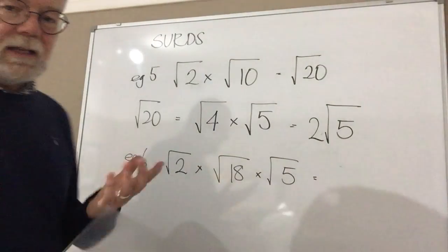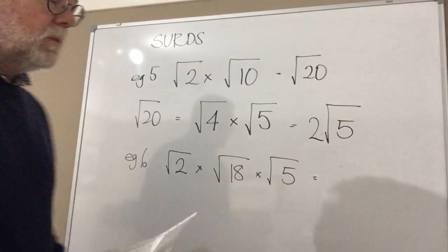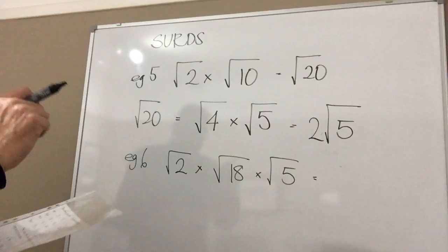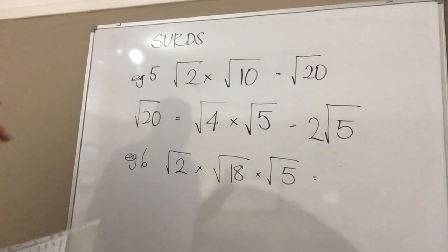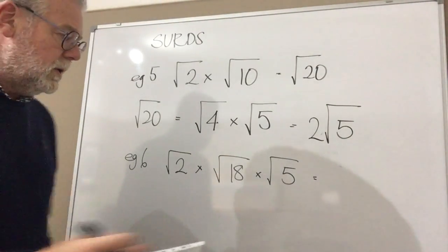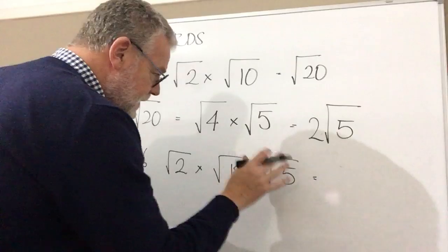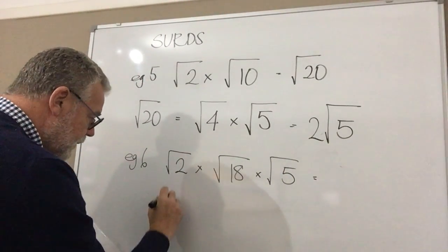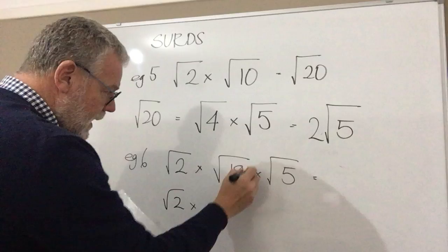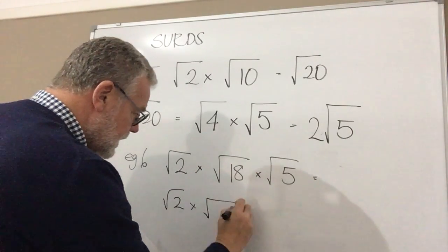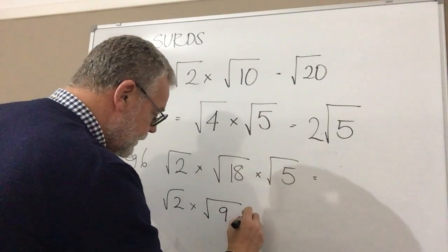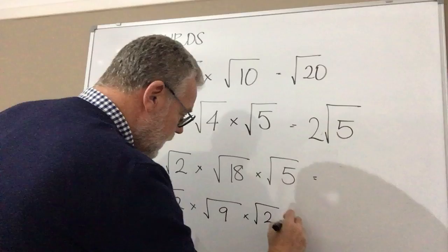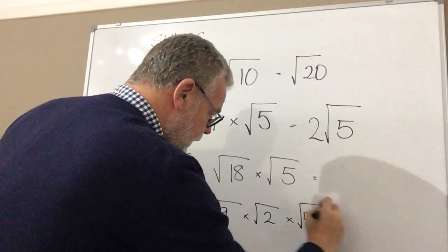Now what we could do, we could multiply out all those together, it gets a bit of a big sum, we could do that. There's a more straightforward way of doing it. I want you to think about square numbers. Can you see the potential for a square number in there? And yes you can, we've got root 2.